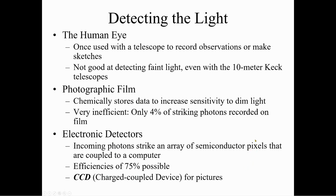Detecting the light — the human eye was once used with the telescope to record observations or make sketches, but it's not good at detecting faint light, even with the 10-meter Keck telescope. Photographic film is not very good either — only 4% of striking photons are recorded on film, chemically stored, and that data fades after a while, losing even some of that 4%. Electronic detectors are the way to go.